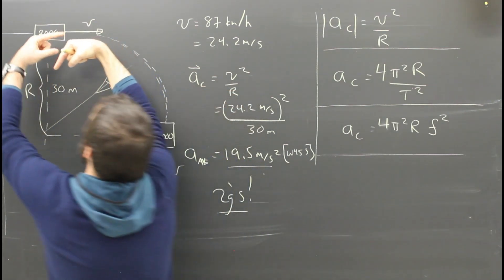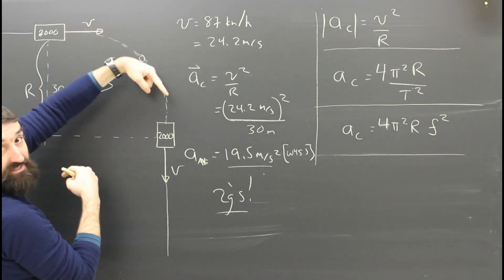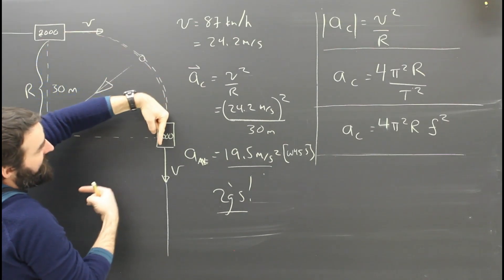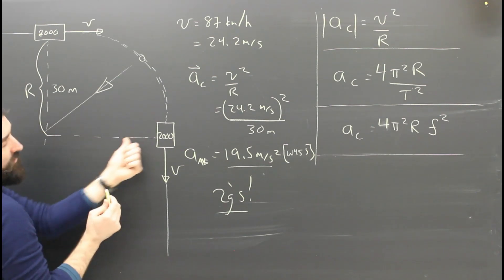At this exact spot, his velocity would be southeast and his acceleration would be southwest. If he keeps turning, at this point, his velocity is south, his acceleration would be west.